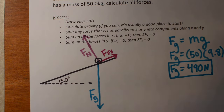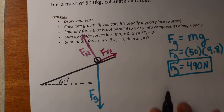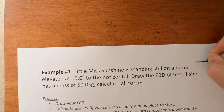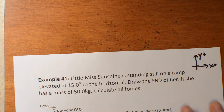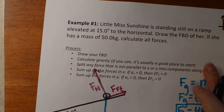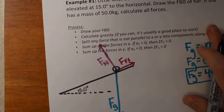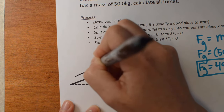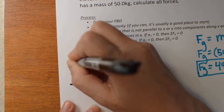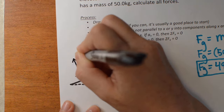Now working on my free body diagram, I really need a coordinate system here. I could do a simple coordinate system where x is positive this way and y is positive up, but that wouldn't be ideal because we're on a ramp. Anytime you're on a ramp, it's going to be a lot easier to make your coordinate system parallel to the ramp. So I'm going to make x positive up the hill, and y positive 90 degrees to the hill.